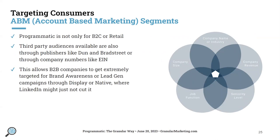Another great option, especially for B2B, is ABM — account-based marketing. Programmatic is not just for B2C or retail; there are great B2B options as well. A lot of people go to LinkedIn for this type of targeting, but we can actually get even more niche and sometimes larger, more engaged audiences with programmatic for B2B. Third-party audiences are available through publishers like Dun & Bradstreet, and we can also target companies by their EIN. These campaigns are good for display or native, where LinkedIn might not have a large enough audience or may be really expensive. You can combine segments — for example, someone with a particular job function at a company with a certain number of employees.